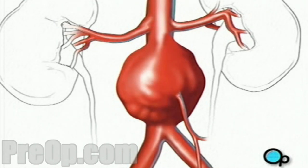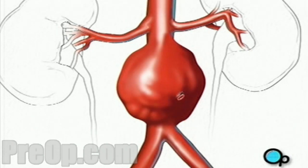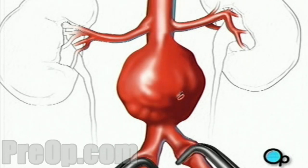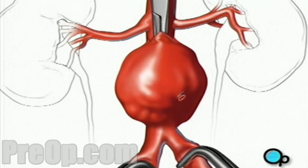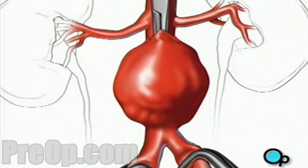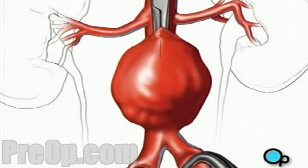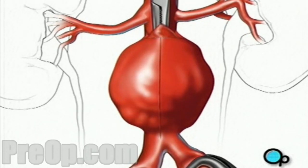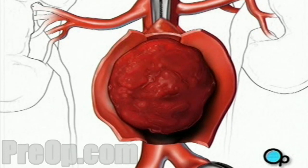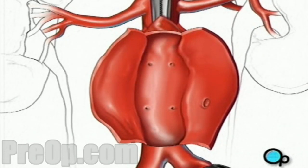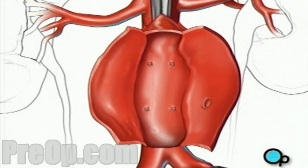Now your doctor can begin to remove the clot. First, he or she will apply clamps to each of the two arteries that branch away from the main artery, temporarily preventing blood from flowing to your legs. Next, your doctor will clamp the artery above the aneurysm. Once the blood supply has been shut off in this manner, your doctor will make a vertical incision in the artery wall and two small horizontal incisions to allow access to the damaged area. The blood clot can then be removed, and the surgical team will sew together any damaged blood vessels inside the aorta.